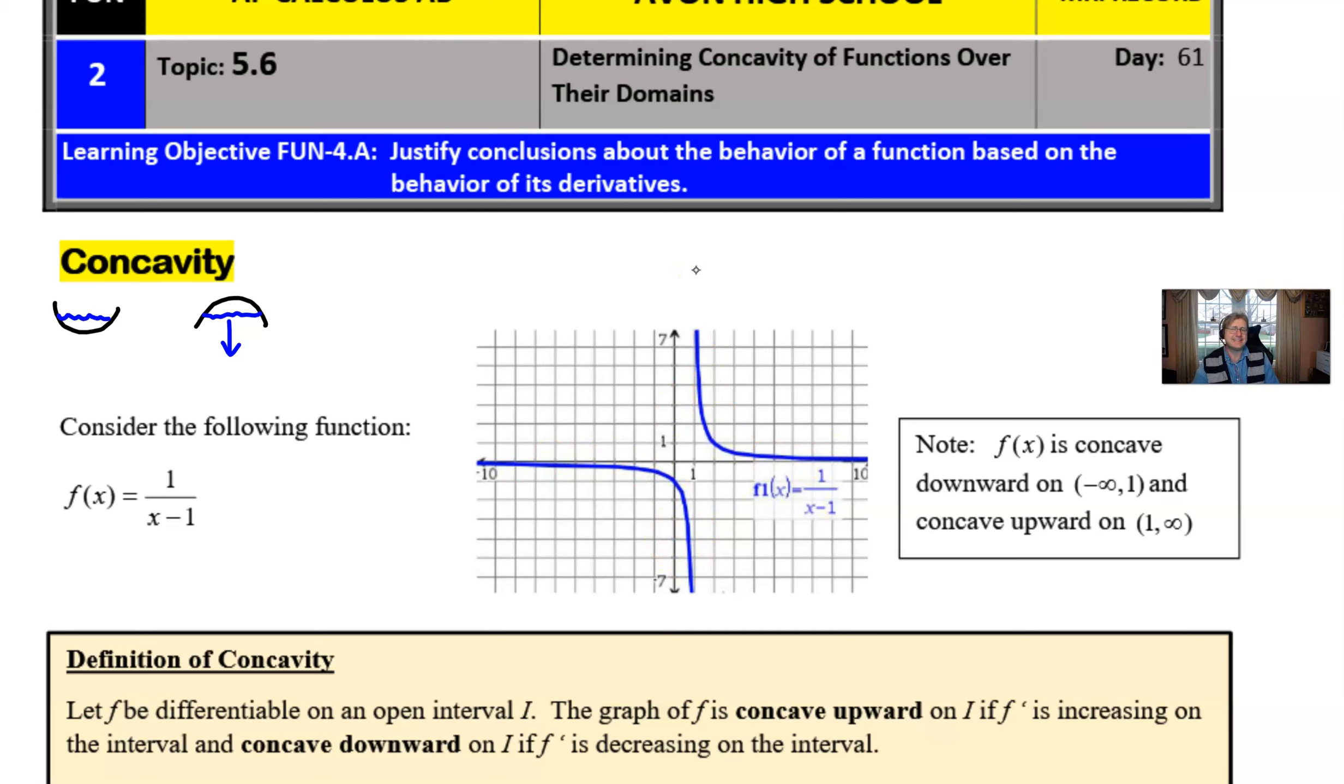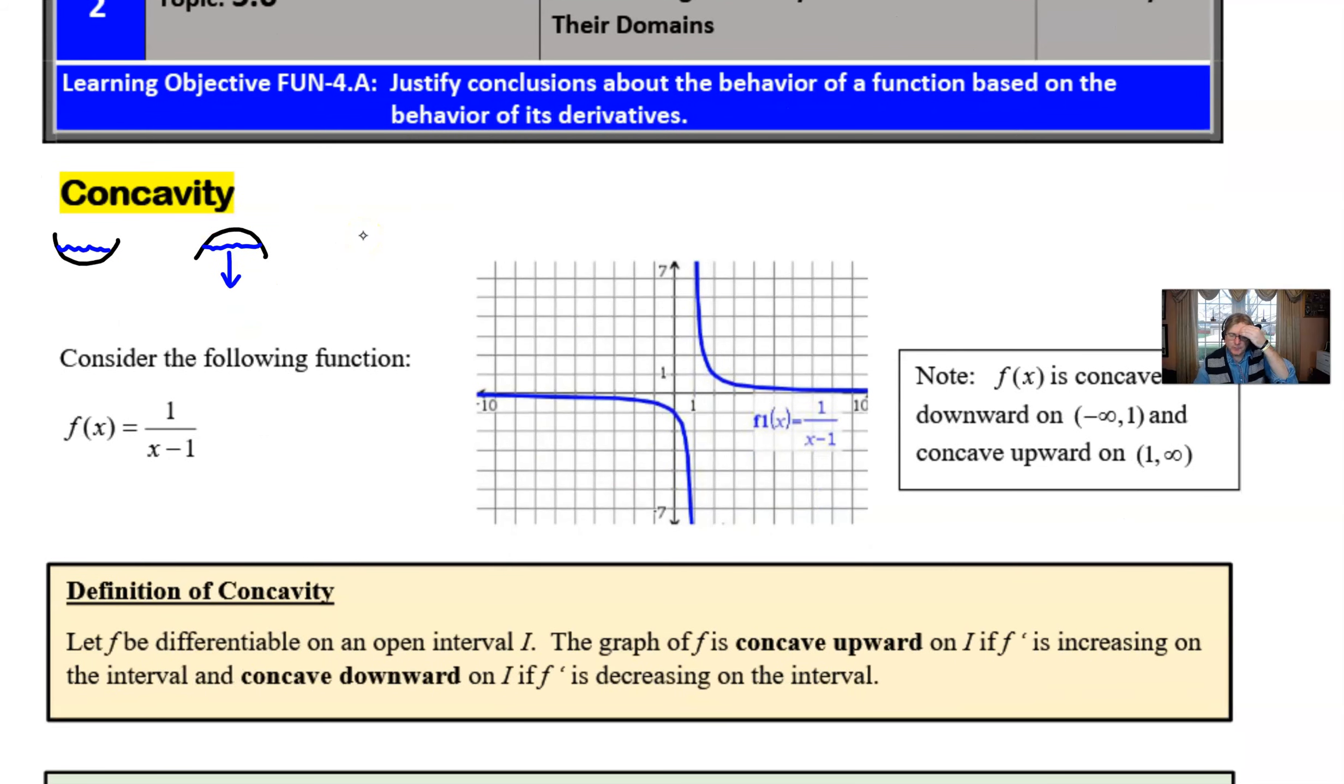But regardless it's not going to be good enough to state that a graph's concave up because it looks like a cup or it's down because it looks like a frown. It's going to require a little bit more insight mathematically and that's what we have here in our orange box as the definition of concavity. And it says let f be differentiable on an open interval I. The graph of f is considered concave upward on I if f prime is increasing. So let's stop right there a moment.